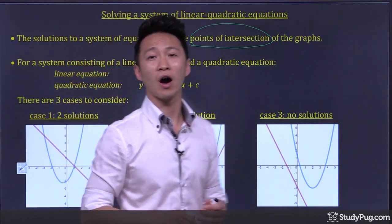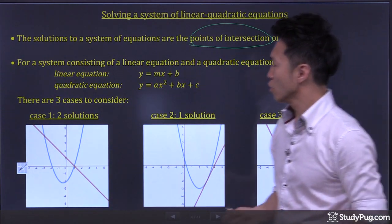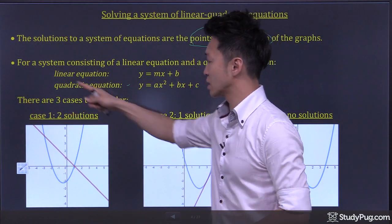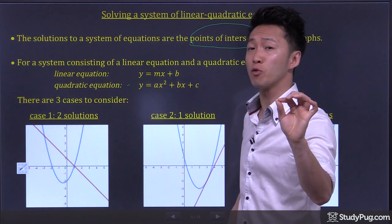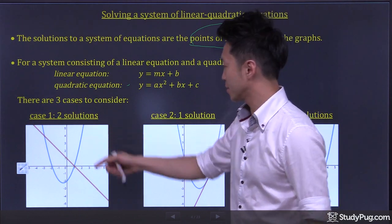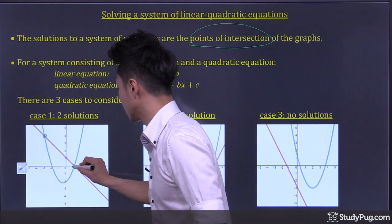And there are three cases to consider. For a linear equation, which means we have a straight line, and a quadratic equation means we have a parabola. The most solutions we can ever have would be two solutions. And that would be case number one. So we have two points of intersections, one here and one here.